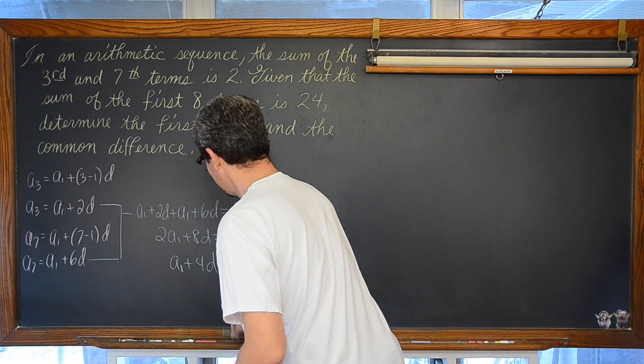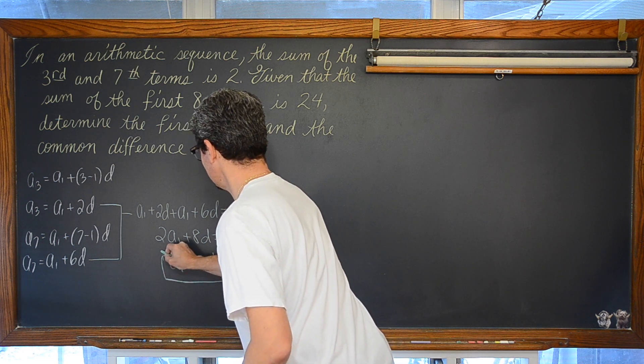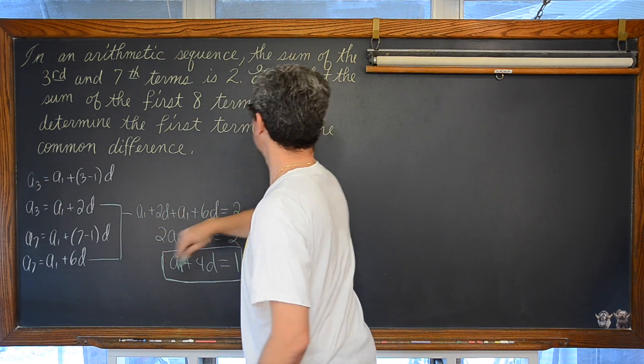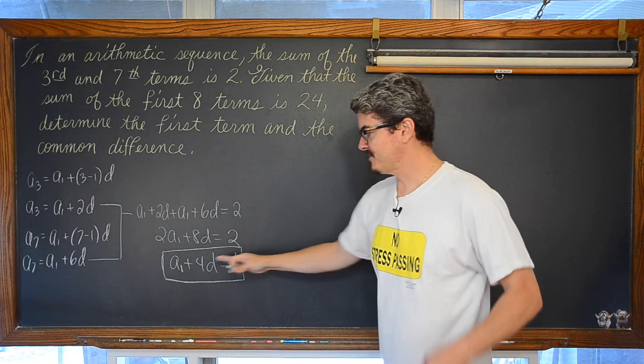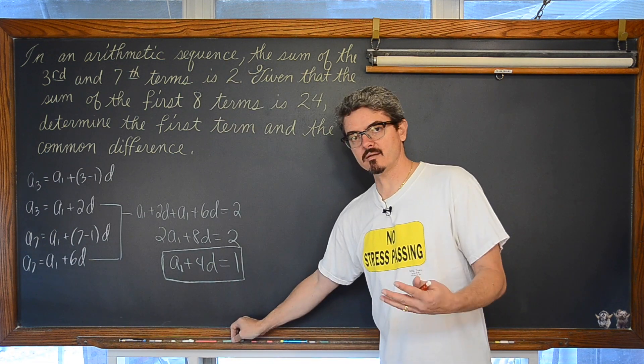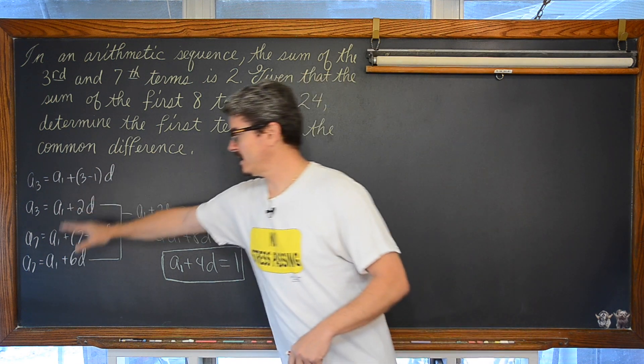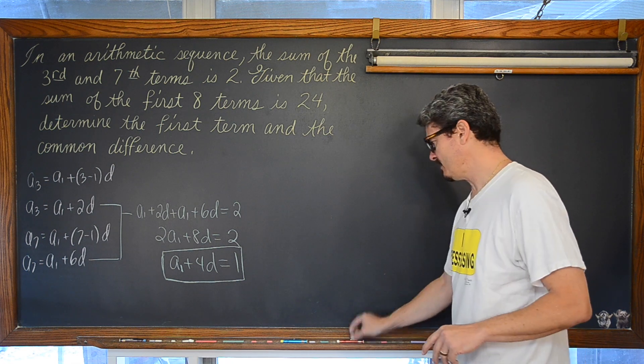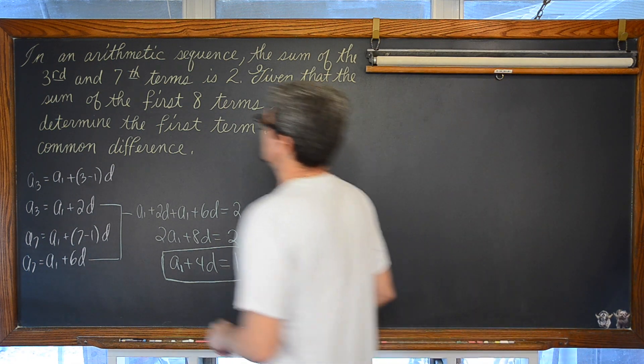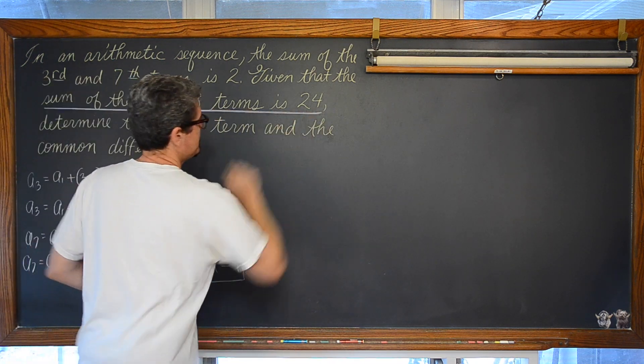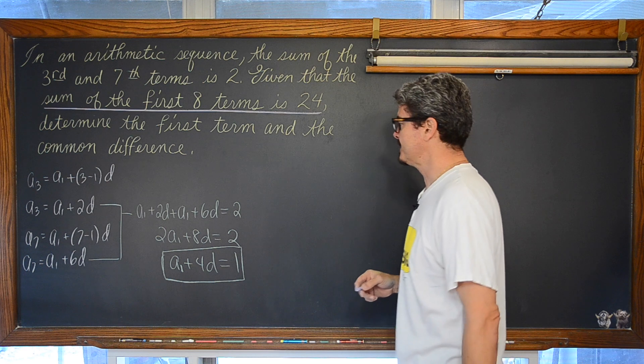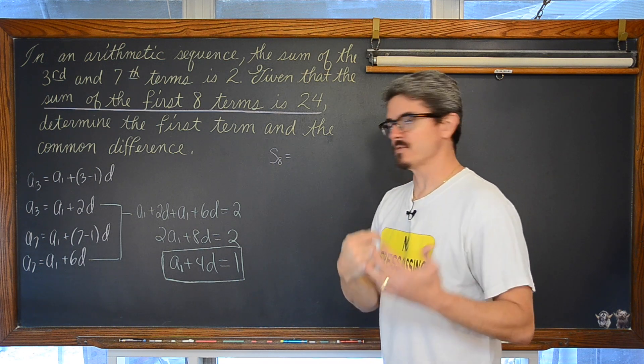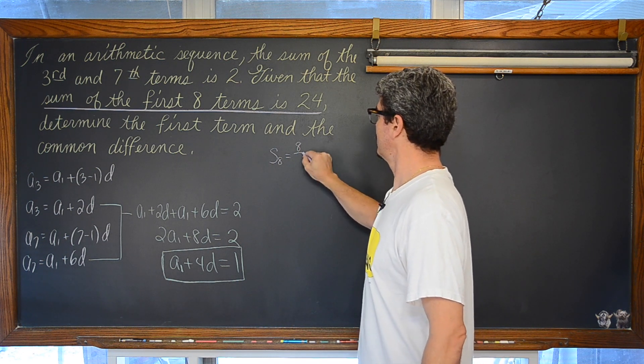This is going to be some relation between those two that I have created from the fact that the third and seventh term add up to 2. Now, let's turn our attention with a different color to the fact that the sum of the first eight terms is 24. The sum of the first eight terms is going to be equal to, well, now we are going to use that partial sum formula. n, 8 over 2. And what is the partial sum formula asking for? The first term, which we don't know.